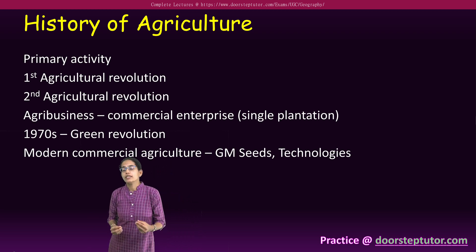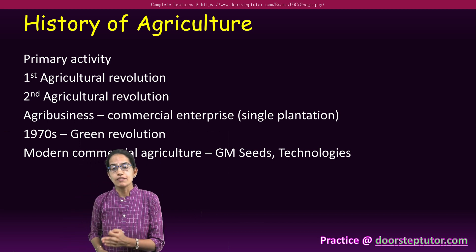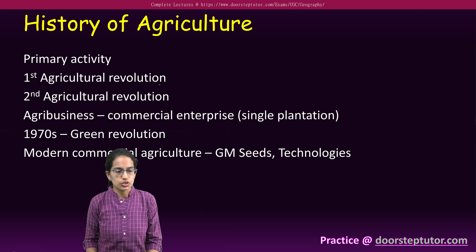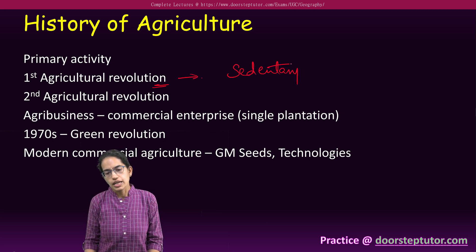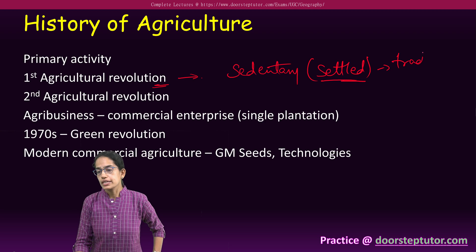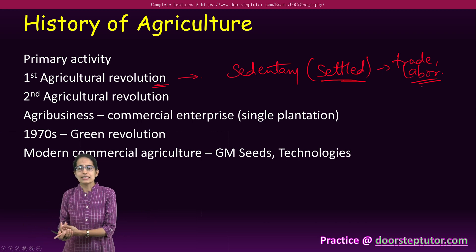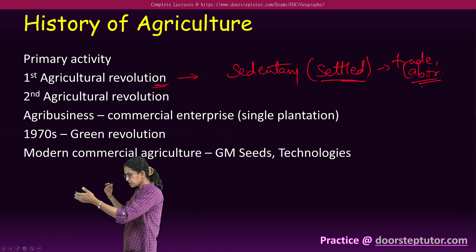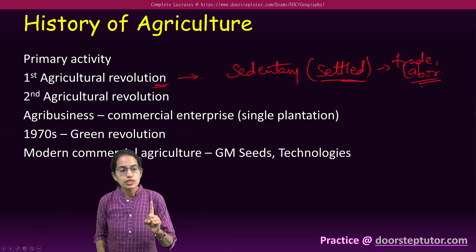But slowly, the settled lifestyle started. And it was with the start of a settled lifestyle that agriculture began — this was called the first agricultural revolution. The first agricultural revolution started with a sedentary lifestyle when people settled at one place. Once settled, they started to develop trade relations and there was also division of labor, with some people involved in agriculture, others in cooking, and some in trade or the barter system.